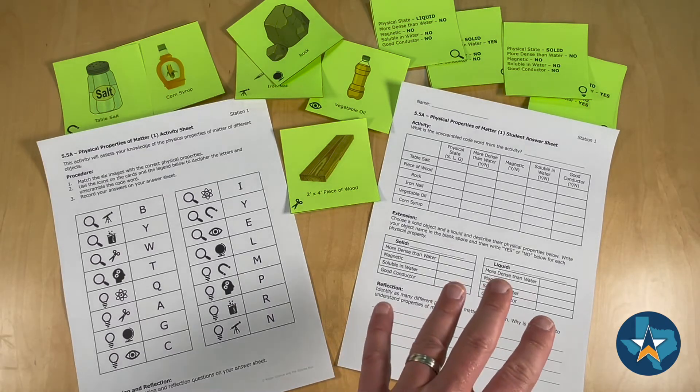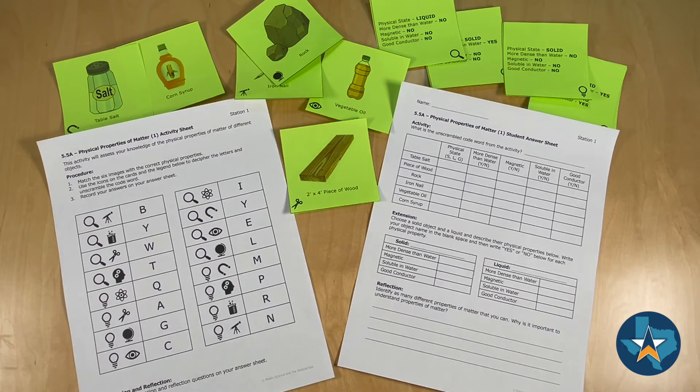On the right-hand side, you'll see the student answer sheet that contains the activity, the extension, and reflection. This will travel with each student as the stations are completed.